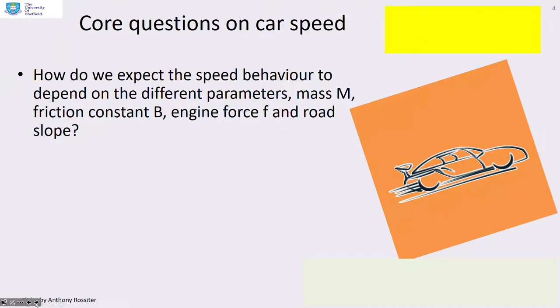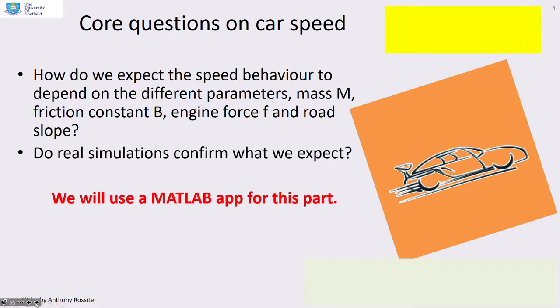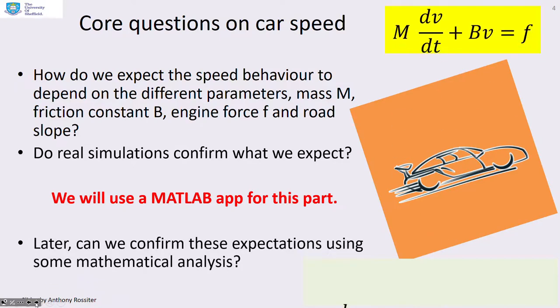Core questions we might want to ask: How do we expect the speed behaviour to depend on different parameters—mass M, friction constant B, engine force F and road slope? And do real simulations confirm what we expect? We're going to use a MATLAB app for this part, and then later, we'll confirm these expectations using some mathematical analysis with the equations you can see here.